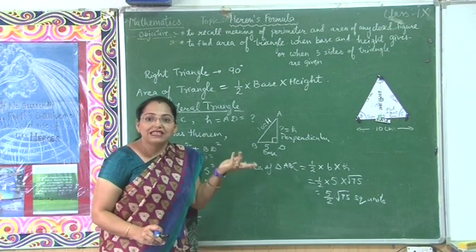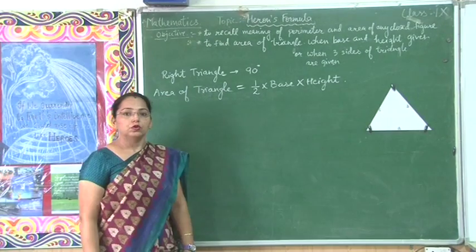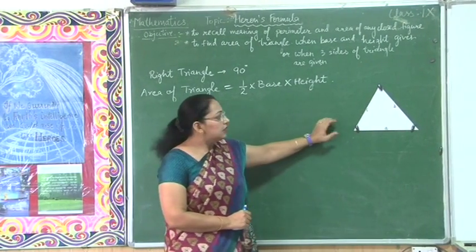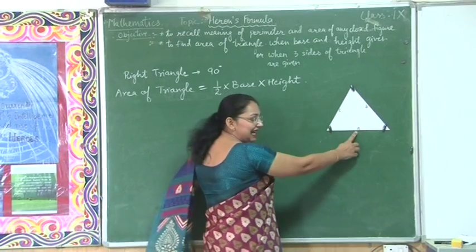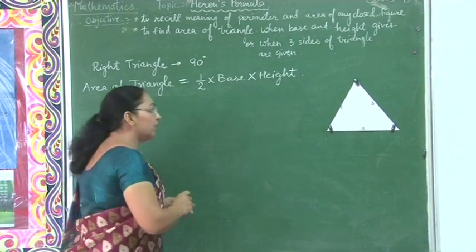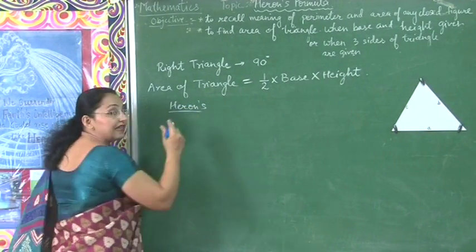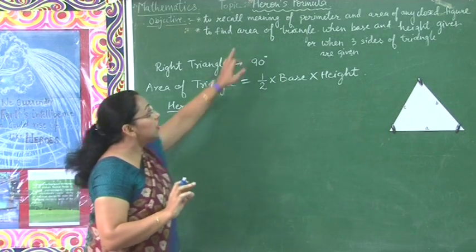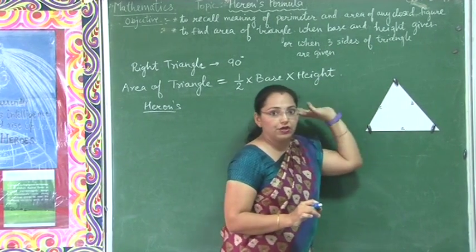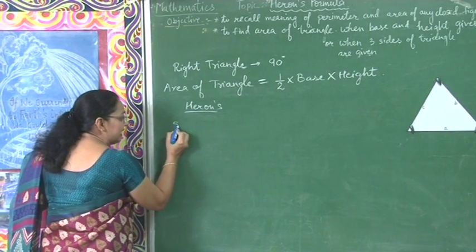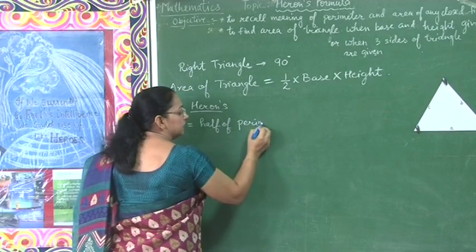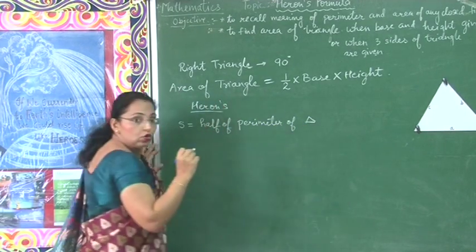What will be the case if we don't know the base and height? If any triangle's base and height are unknown, how do we find its area? Suppose a triangle has three sides of lengths A, B, and C units. One important mathematician, Heron, gave us a marvellous formula called Heron's formula to find the area of any triangle whose three sides are given. According to him, we first calculate S, which depicts half of the perimeter of that triangle.